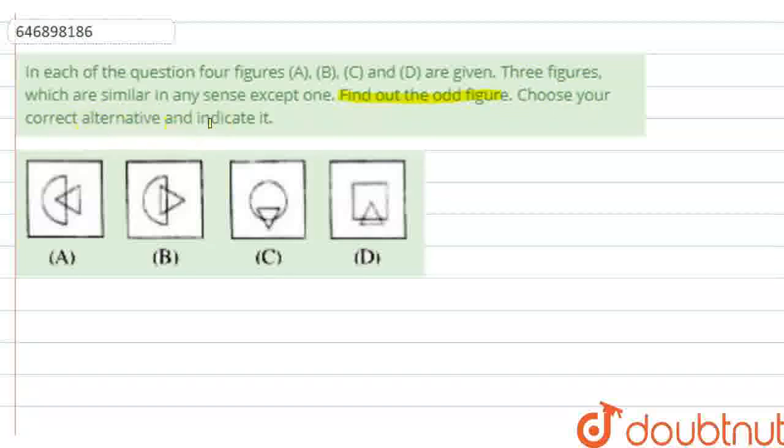So basically, here we have a question where we have 4 figures in the options. And we have to identify which figure is the odd one out. This means that in each of the figures, there are 3 figures which are similar to each other, and there is one figure which is different. So here we have to tell which one is different.